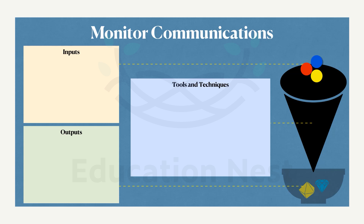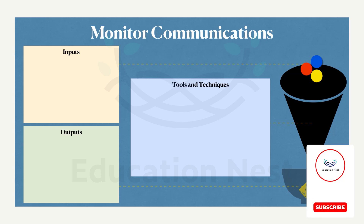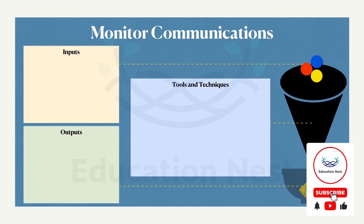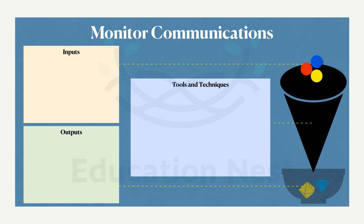This is important because we understand the level of impact of a miscommunication. As I mentioned in the beginning, if some wrong information is sent out to somebody who is not supposed to get it, how that can affect the overall project can be understood during this monitoring. So the level of impact of a miscommunication — for example, you send a project status to a very high-level person of a customer, so it could impact greatly.